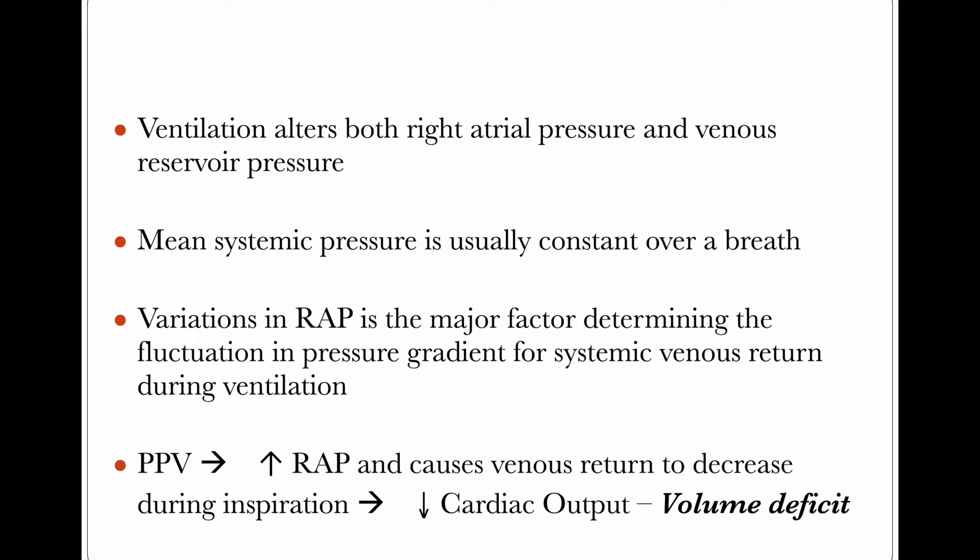Now in spontaneously breathing patients, let us see the interaction in ventilated patients. Positive pressure ventilation — as opposed to negative pressure ventilation we experience during spontaneous breathing — will affect both right atrial pressure and venous reservoir pressure. The mean systemic pressure is generally constant over a breath, but variations in right atrial pressure are the major factor determining fluctuations in the pressure gradient for venous return. Once positive pressure is applied to the heart and lungs, RAP rises, and there is a reduction in venous return, causing a cardiac output fall during inspiration.